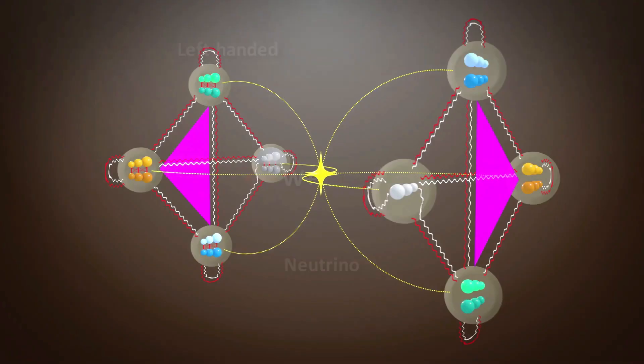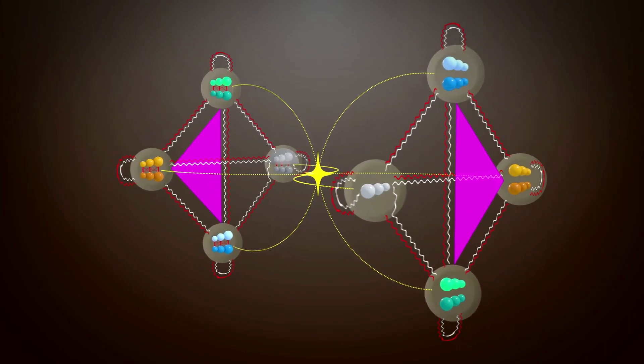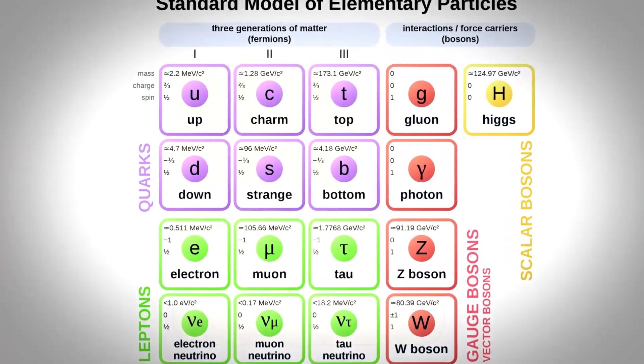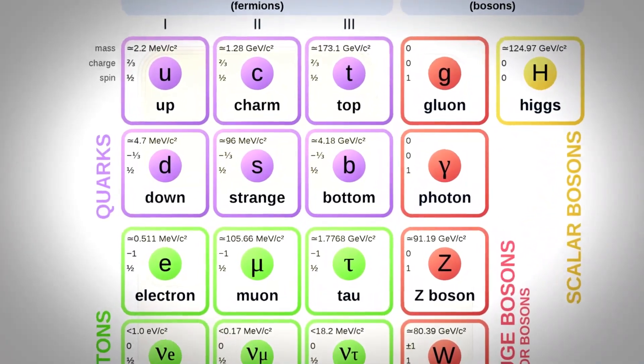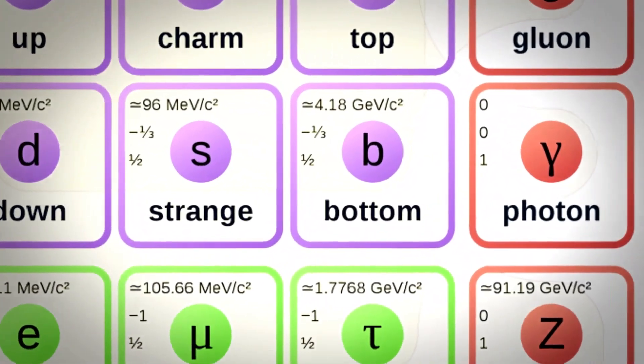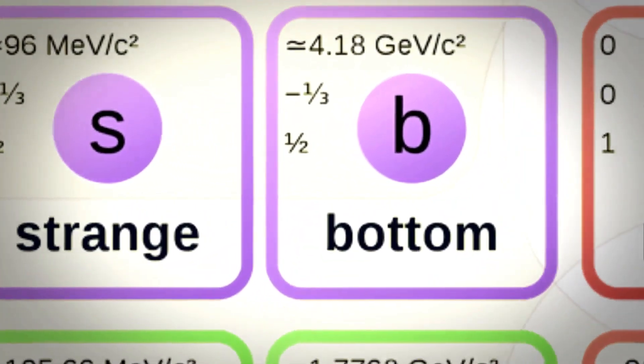Many particles, like electrons, can act like tiny magnets. Scientists can measure the strength of this phenomenon known as a particle's magnetic moment. For electrons, the predictions of the standard model agree strongly with measurements. But this isn't the case for the muon, a cousin of the electron.